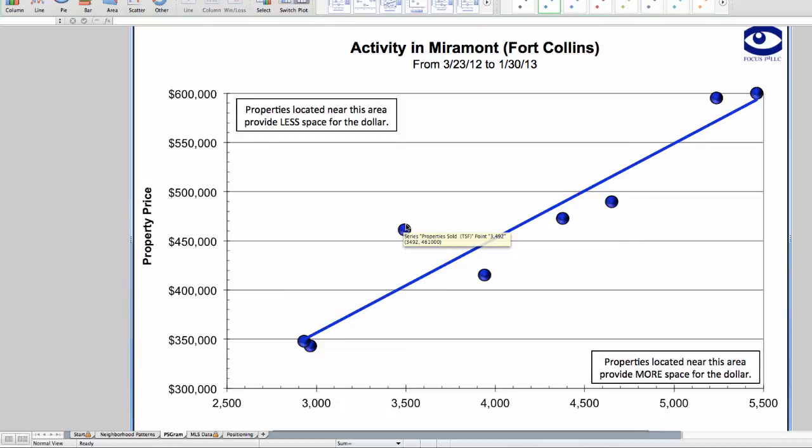On the upper left and lower right are the value boxes. Properties closer to this box have less space for the dollar, and properties which are closer to this box have more space for the dollar. In general, homes nearer to this box would have more value. Now we say in general because we still need to look at the condition and special features of the individual homes before we make that assumption.